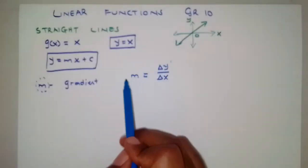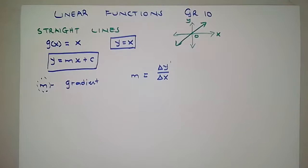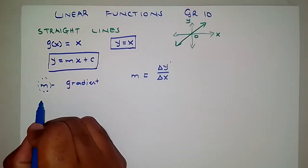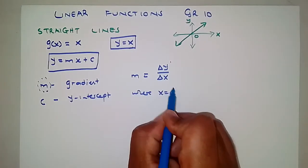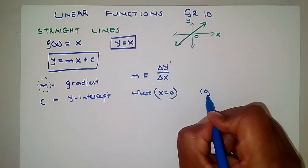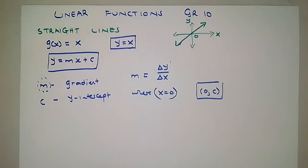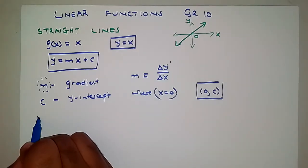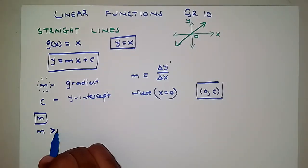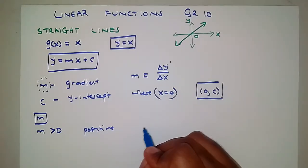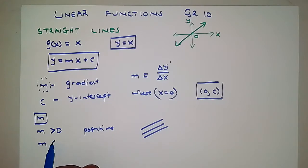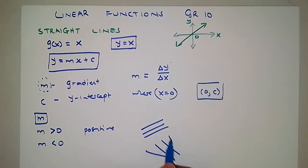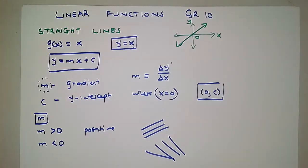If m changes, obviously the graph or the function is going to change to some degree. And c here is the y-intercept — where x equals zero — such that the coordinates of the y-intercept are going to be (0, c). When m is greater than zero, or when m is positive, your line is going to slope upward. When m is negative — less than zero — your line is going to slope downward.